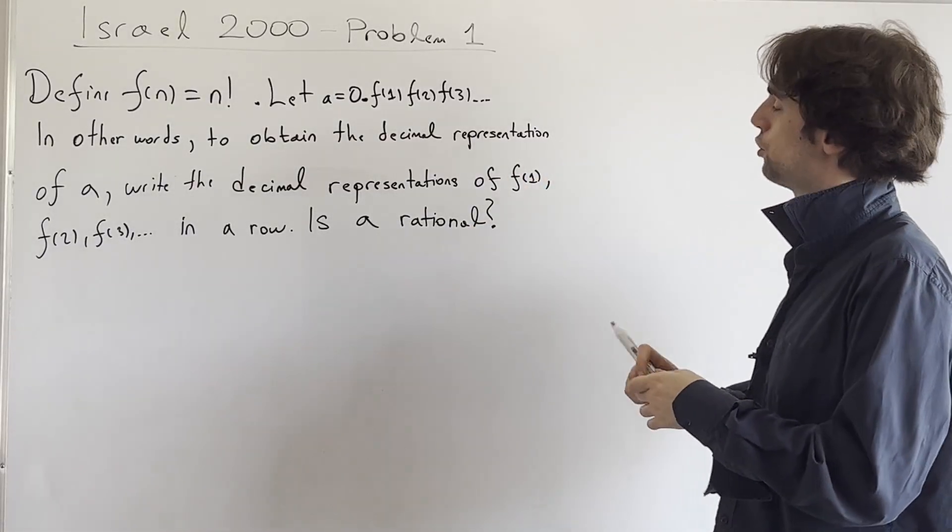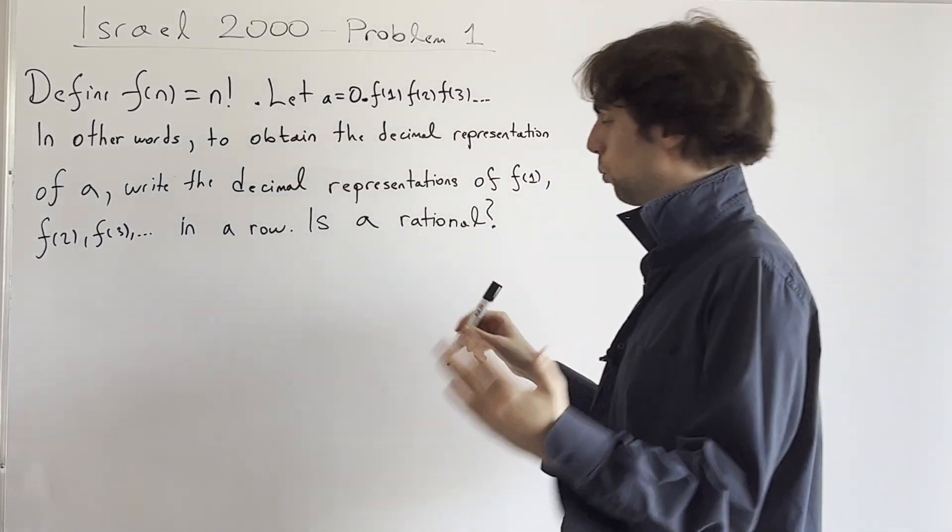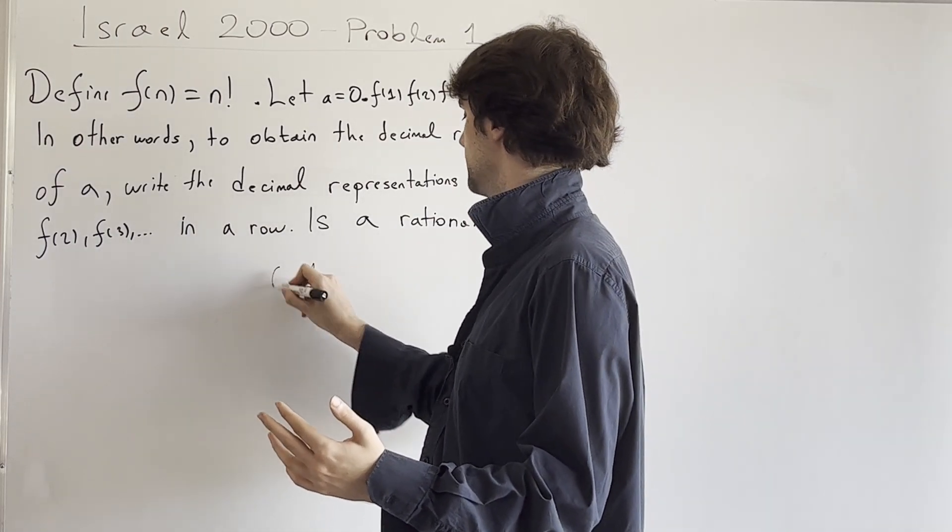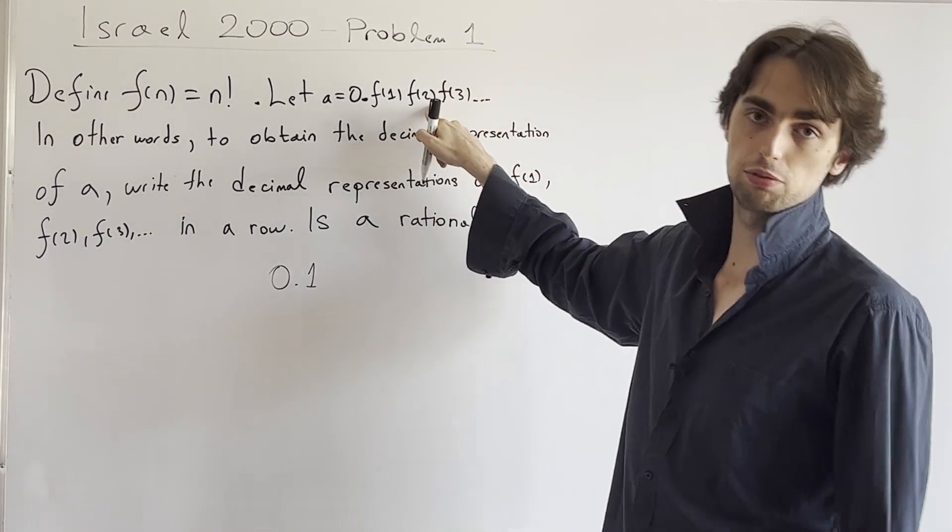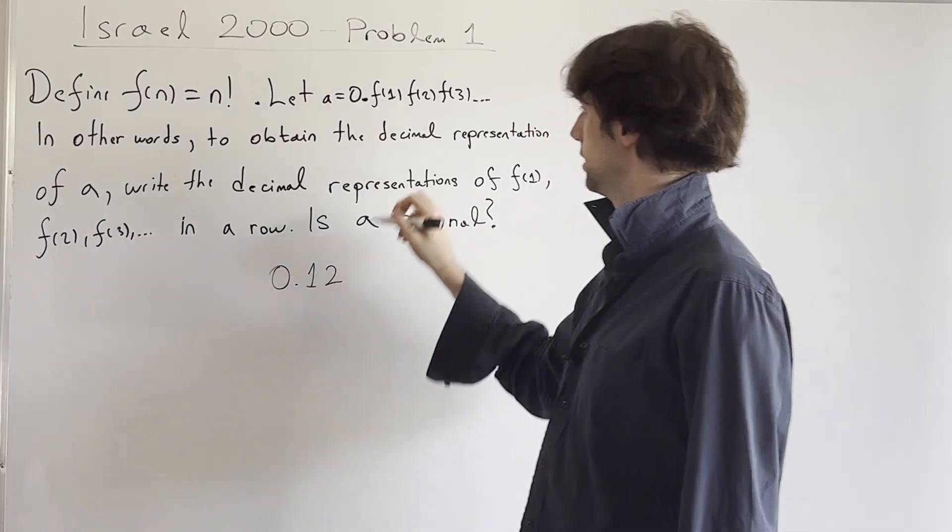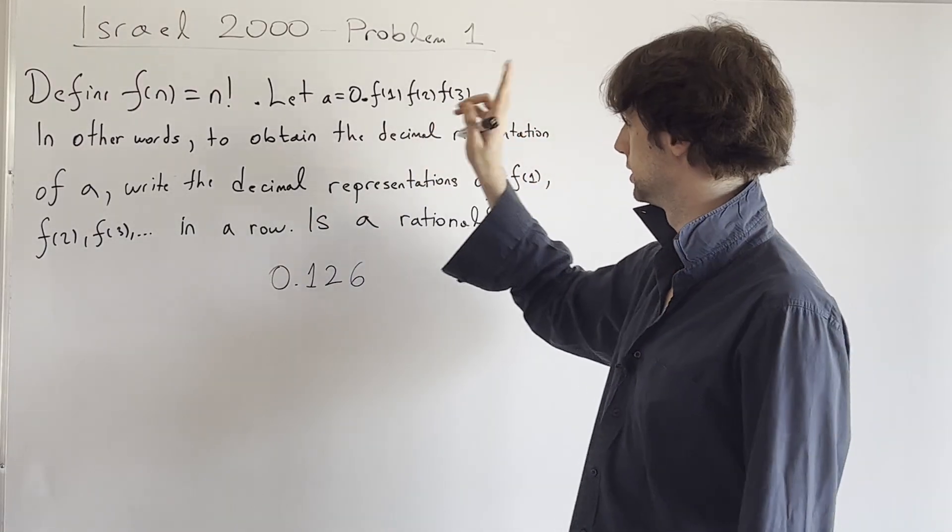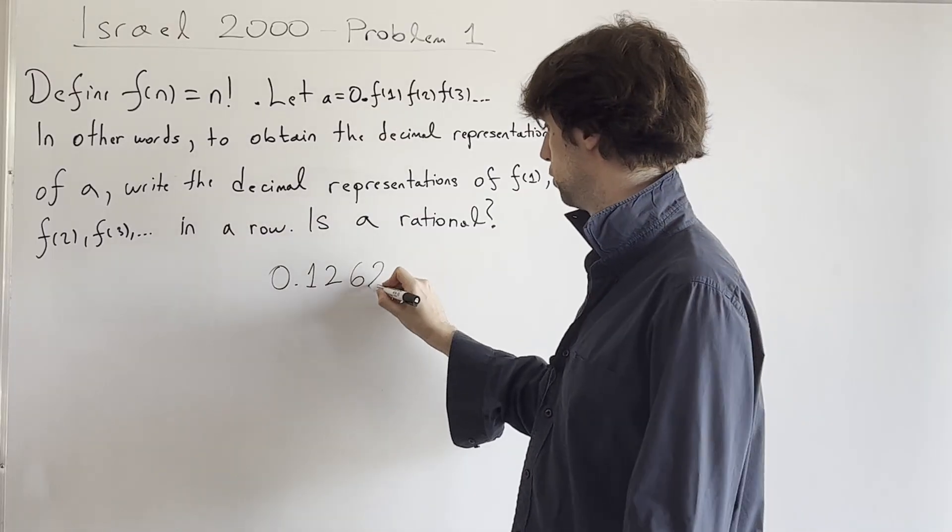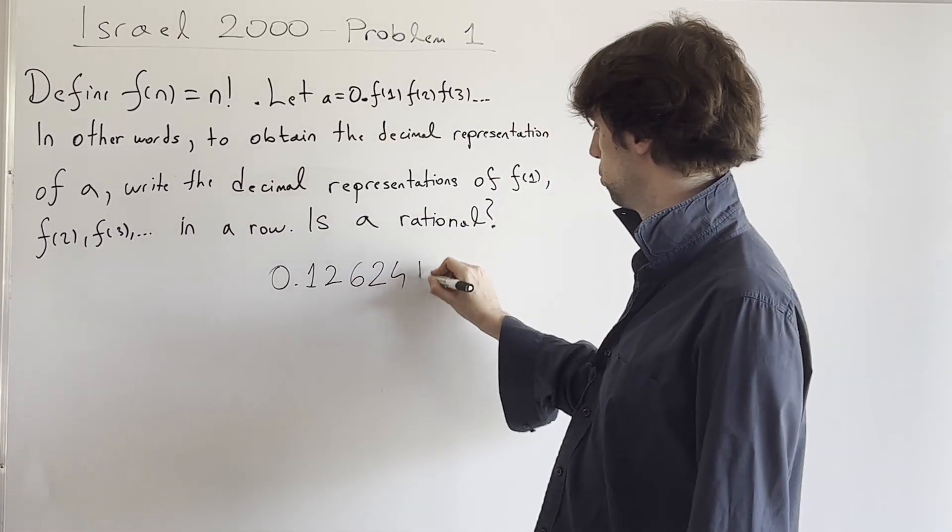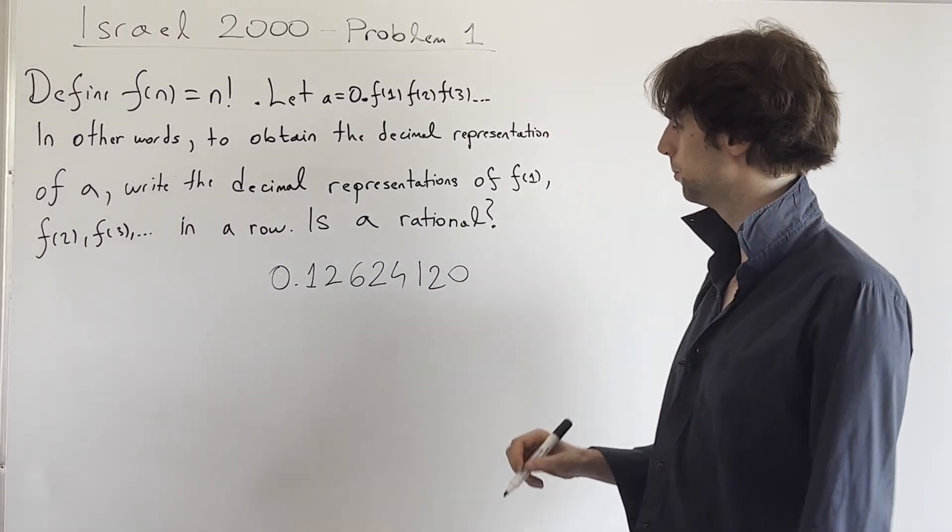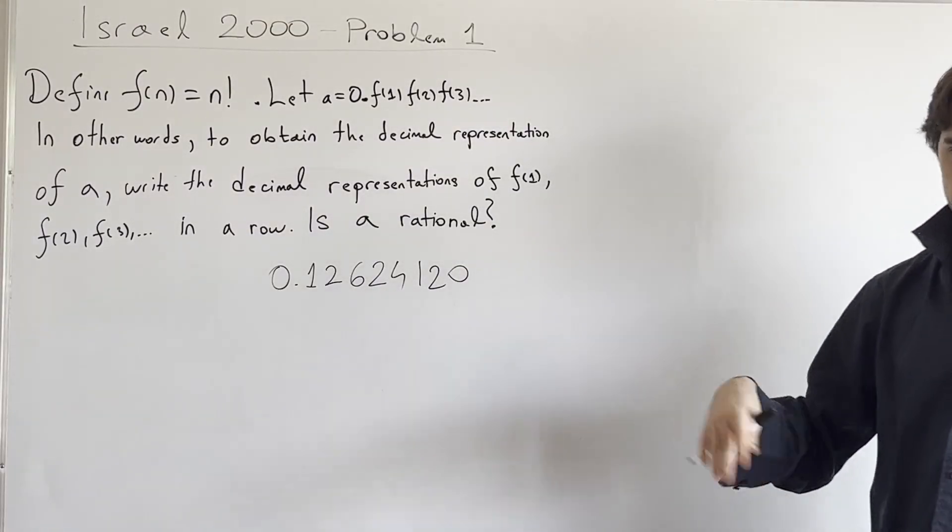We have a number that is literally the digits of one factorial. So it's going to be like A is 0.1, then 2 factorial is 2, then 3 factorial is 6, then 4 factorial is 24. So we have now 2, 4, then 5 factorial is 120. So we have 1, 0, 2, and then we have so on and so forth.